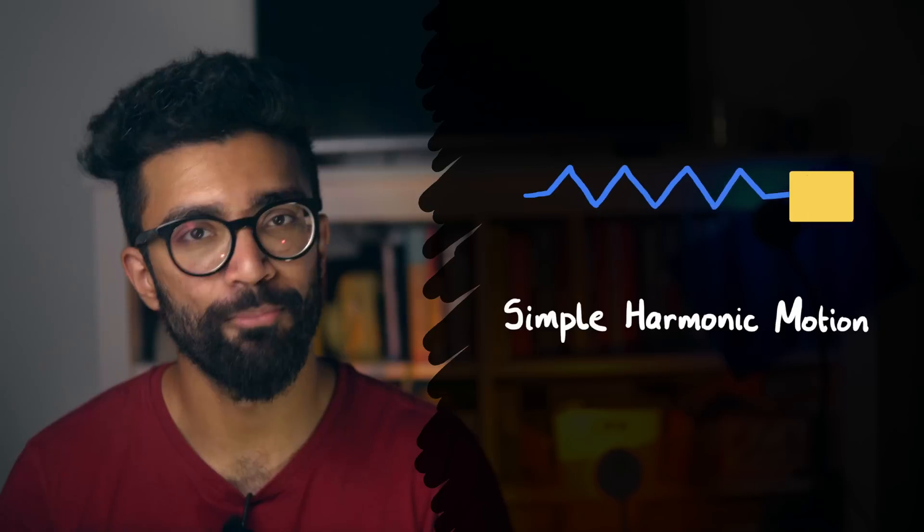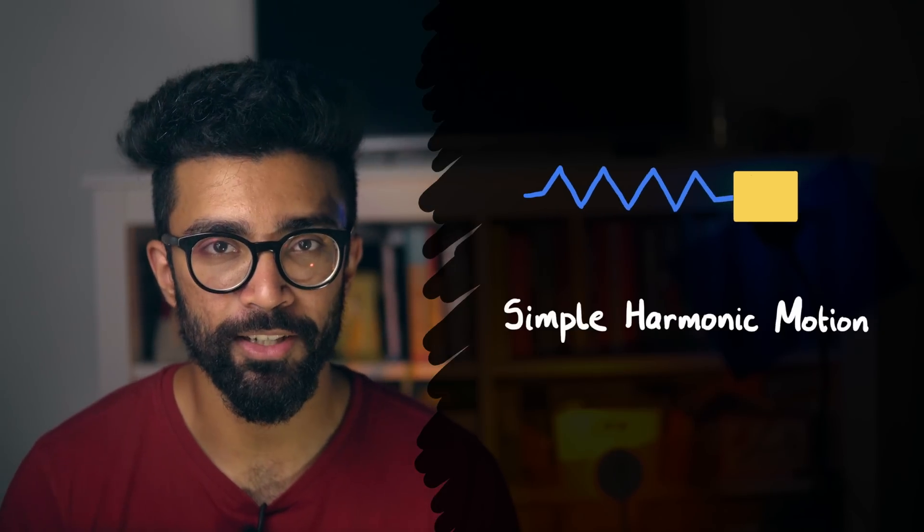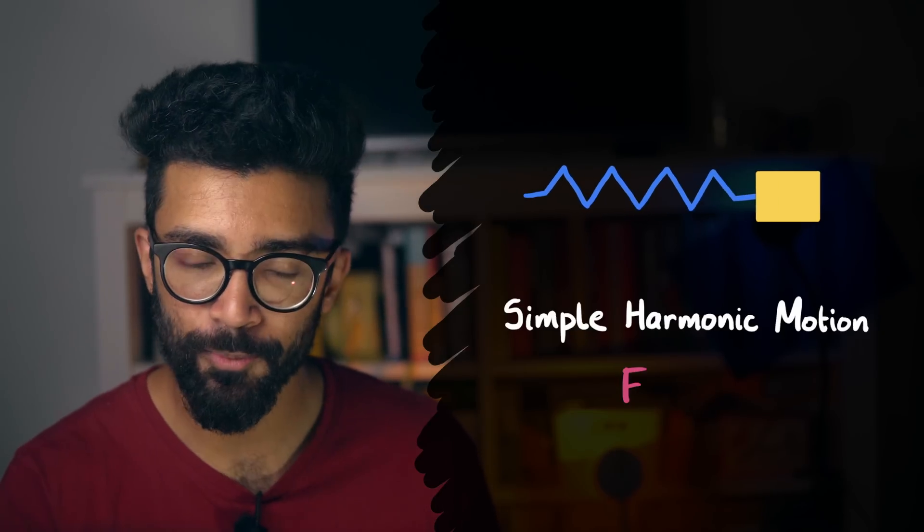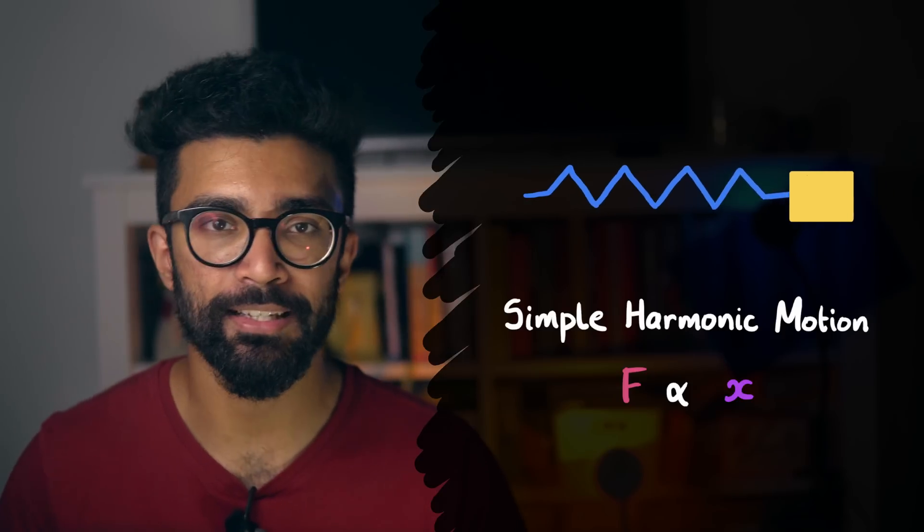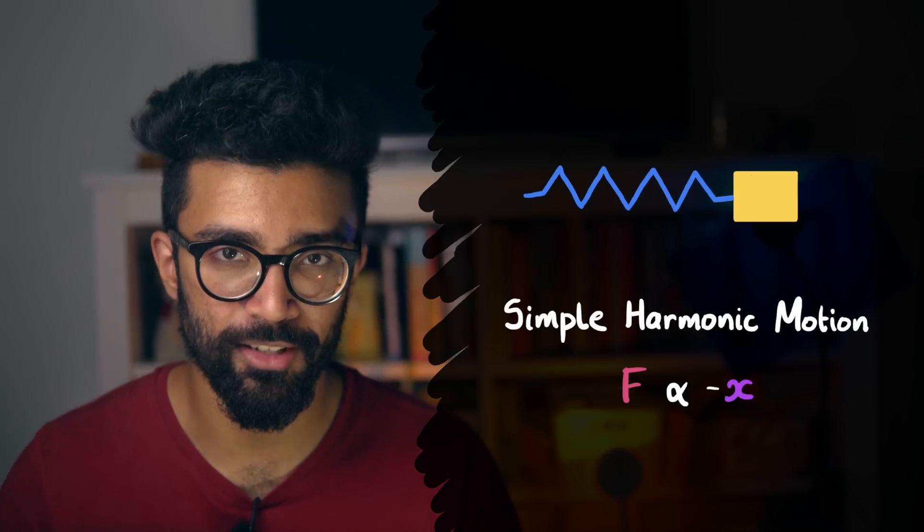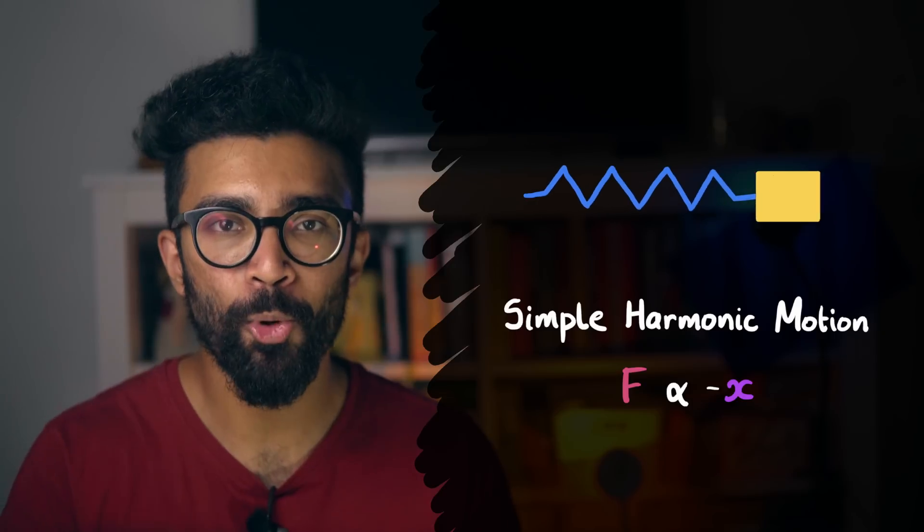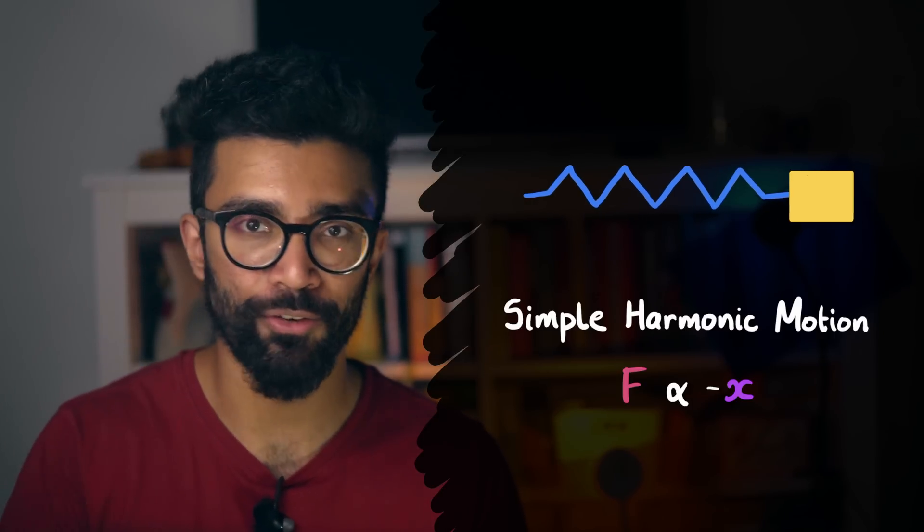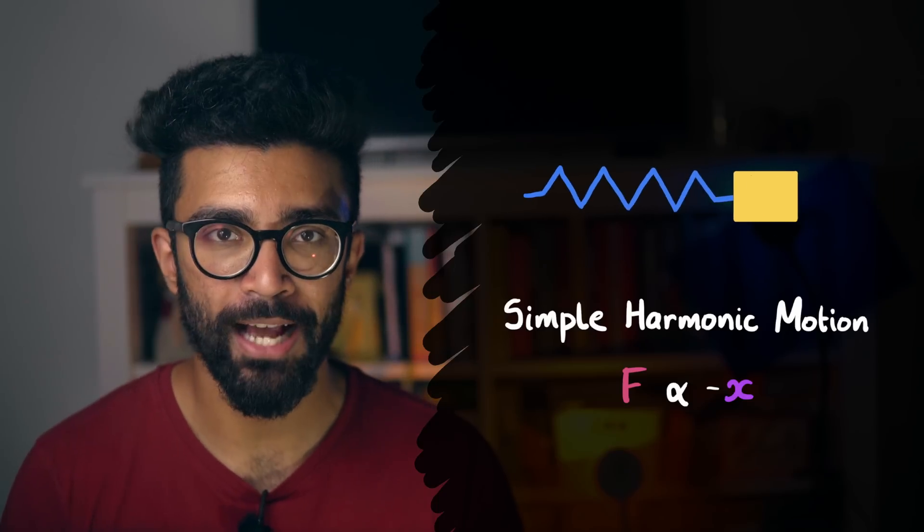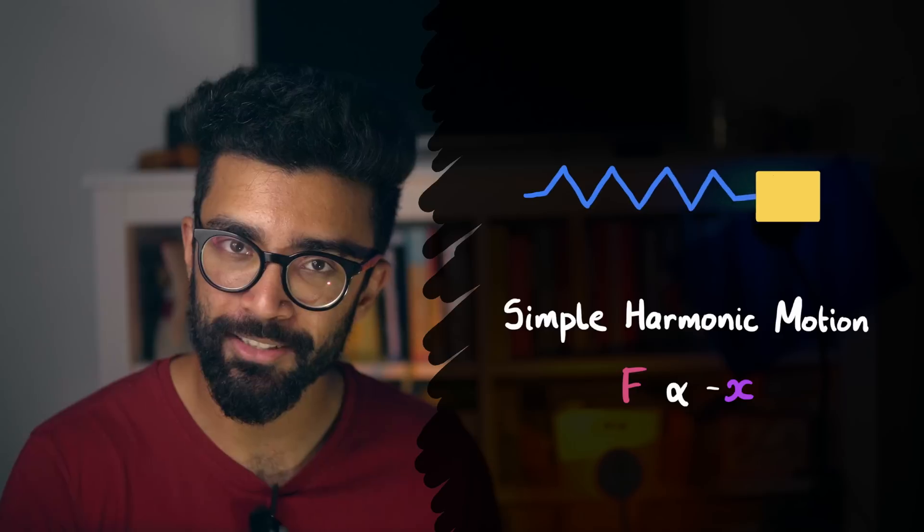This particular motion is known as simple harmonic motion. It specifically occurs when the force being exerted is proportional to the displacement and the force is in the opposite direction to the displacement. So the more the object is moved away from equilibrium the larger the force and also the force acts to move the object back to equilibrium.